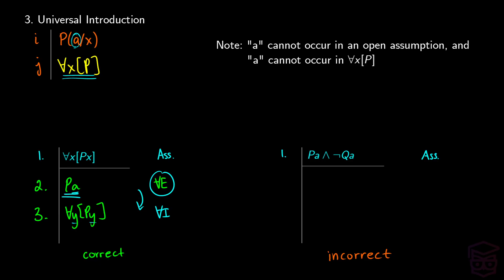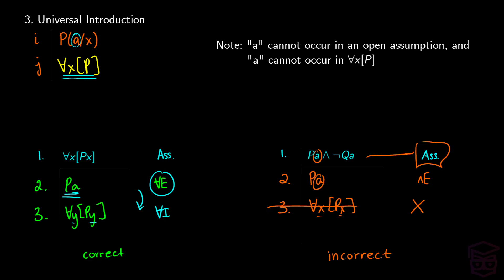But if we look at an incorrect example — imagine we have P(a) and not Q(a) as our assumption. We take P(a) on line two via and-elimination. What we cannot do in this case is say for all x, P(x). This one is wrong — not because a doesn't appear in the result, that's fine, but because this a came from an assumption. So we cannot introduce the universal when working with a constant that came from an assumption. In the correct example, the assumption was about for all x, P(x), not about a specific constant.